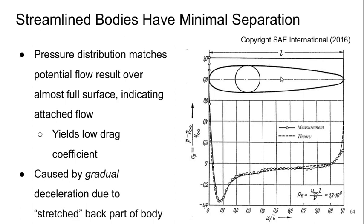And the reason that this happens is because we've got a very gradual deceleration of the flow since the back part of the body is stretched out. And that tends to keep the flow attached because the adverse pressure gradients will not be strong.